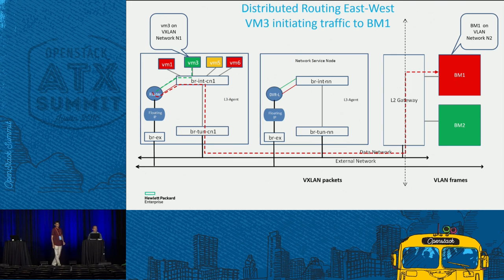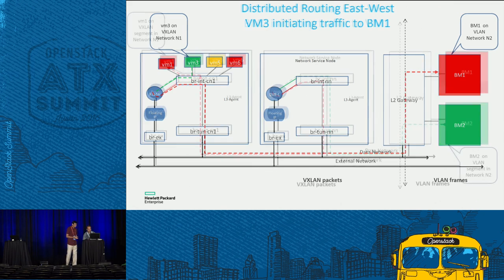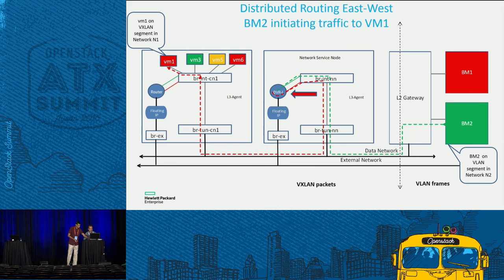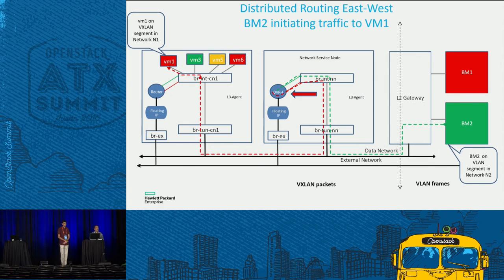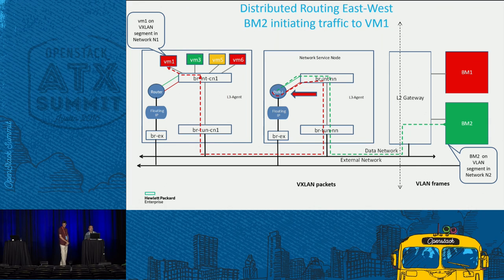Another questioner asked about the return path from BM1 to the VM — specifically whether the diagram shows the actual data path or just ARP control plane. The presenter confirmed it is the actual data path. Thank you for attending the presentation.